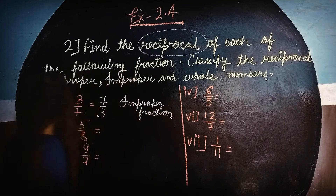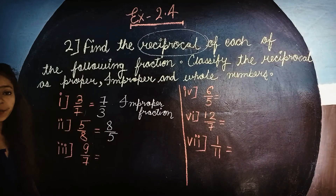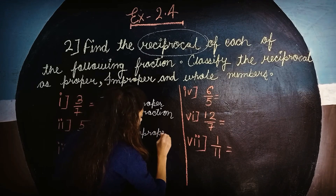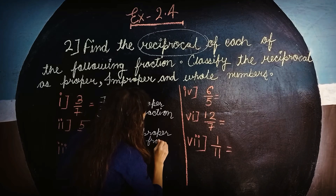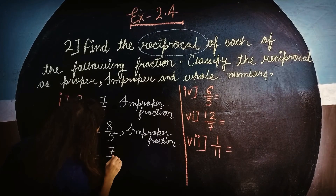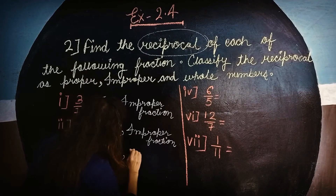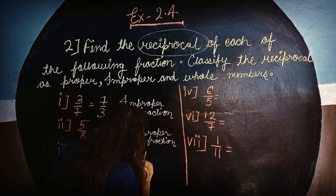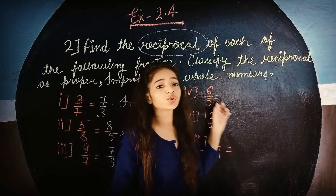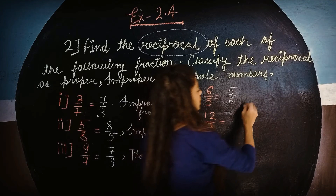The reciprocal of 5 upon 8 is 8 upon 5, which is again an improper fraction. Next, the reciprocal of 9 upon 7 is 7 upon 9 — numerator smaller than denominator, so it is a proper fraction. The reciprocal of 6 upon 5 is 5 upon 6, which is again a proper fraction.